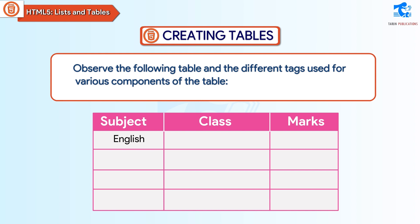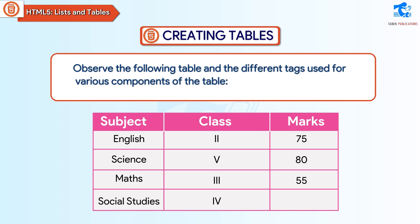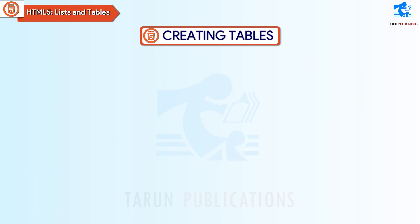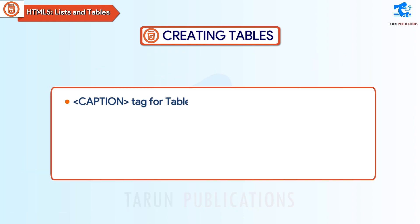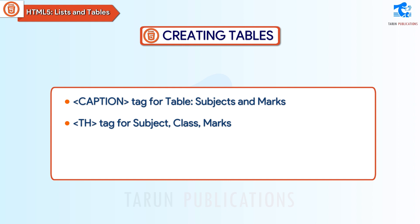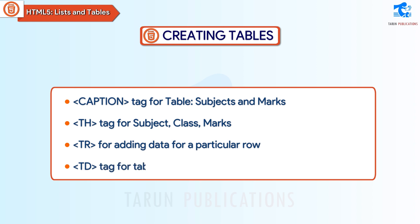Observe the following table and the different tags used for various components. The sample table contains: English, Class 2, Marks 75; Science, Class 5, Marks 80; Maths, Class 3, Marks 55; Social Studies, Class 4, Marks 70. The caption tag is used for the table title 'Subjects and Marks'. The th tag is used for column headers: Subject, Class, Marks. The tr tag adds data for a particular row, and the td tag is used for table entries such as English and 75.